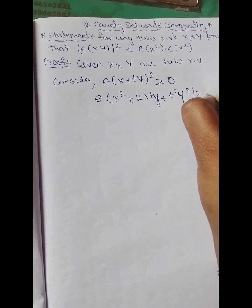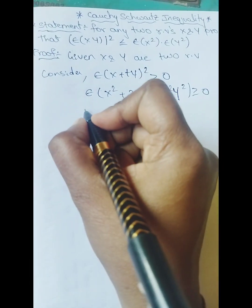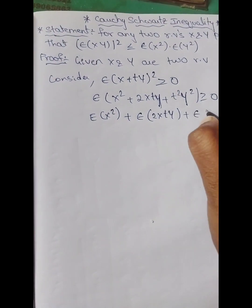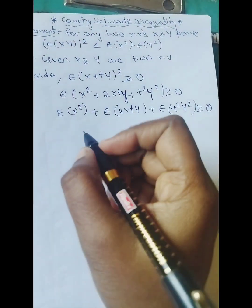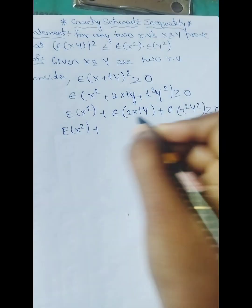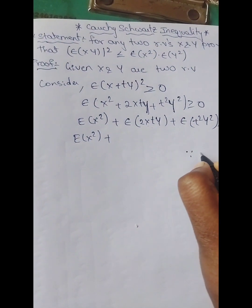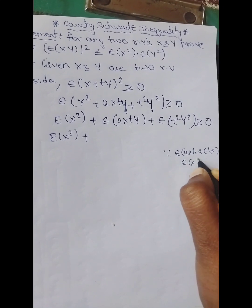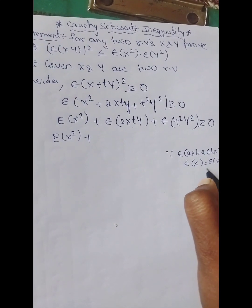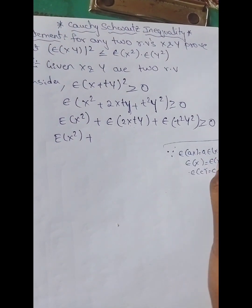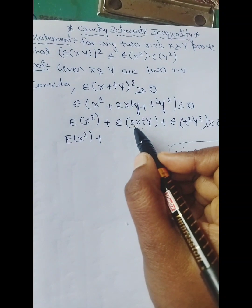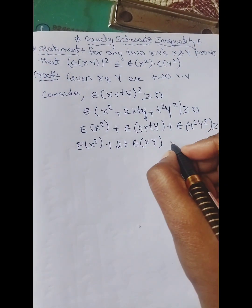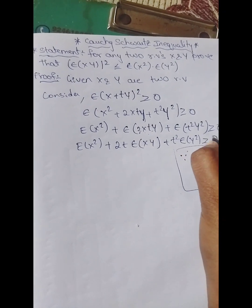After expanding, we get the expression greater than or equal to 0. Applying expectation to each term: expectation of x² + expectation of 2xty + expectation of t²y² ≥ 0. Since expectation of ax = a·expectation of x and expectation of a constant is the constant itself, we take constants 2 and t outside: E(x²) + 2t·E(xy) + t²·E(y²) ≥ 0.